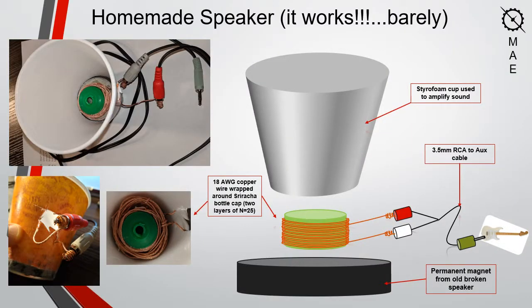I was able to make my own speaker using some 18-gauge copper wire, a Sriracha bottle top, an old permanent magnet, a 3.5mm RCA to auxiliary cable, a styrofoam cup, and some super glue. Once connected to a power source, I was actually able to hear the songs being played, however it was so soft that my recording device was unable to pick up the sound. I believe if I were able to significantly increase the number of turns of the wire, I would be able to pick up the noise with my recorder. I swear on this project's grade that I was successful in making my own speaker, albeit barely. Thank you for listening — please enjoy my own song in the next slide.